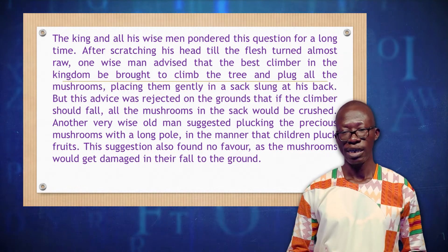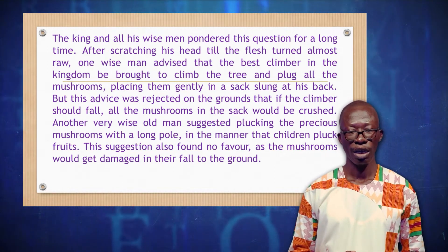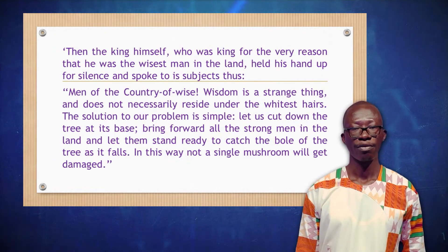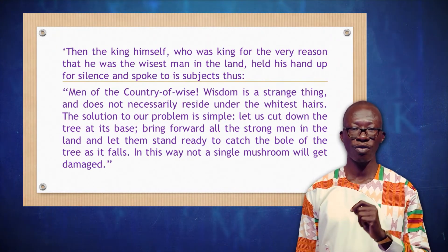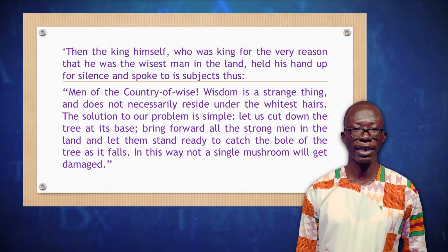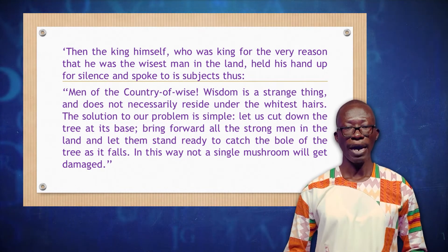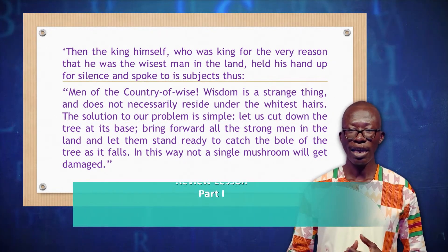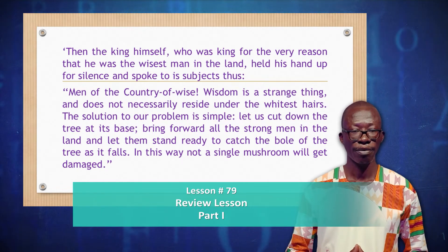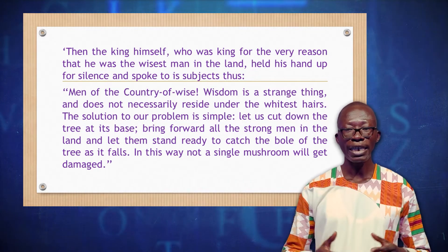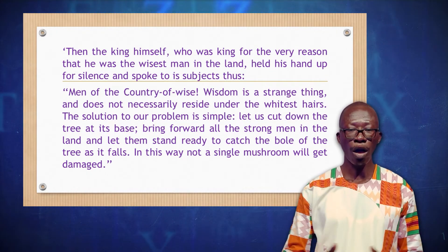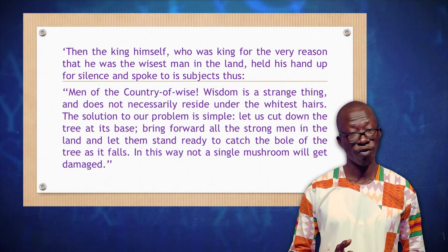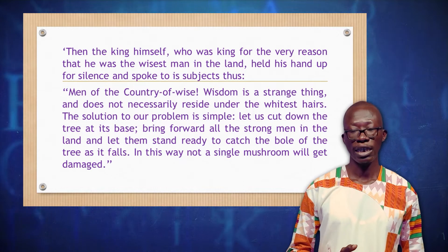This suggestion also found no favor, as the mushrooms would get damaged in their fall to the ground. Then the king himself, who was king for the very reason that he was the wisest man in the land, held his hand up for silence and spoke to his subjects thus: Men of the country of the wise, wisdom is a strange thing and does not necessarily reside under the whitest heads. The solution to our problem is simple. Let us cut down the tree at its base, bring forth all the strong men in the land, and let them stand ready to catch the bough of the tree as it falls. In this way, not a single mushroom will get damaged.